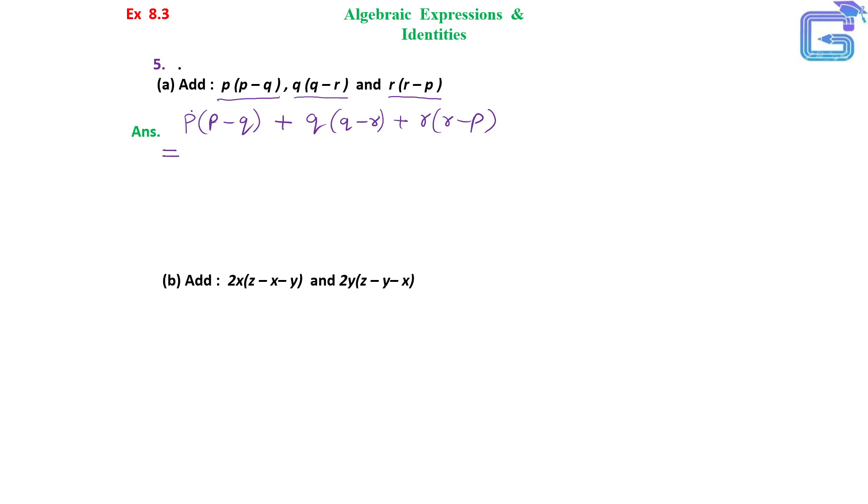What we have to do is multiply the monomial with the binomial. We have to simplify and solve each bracket, then we can go for addition.